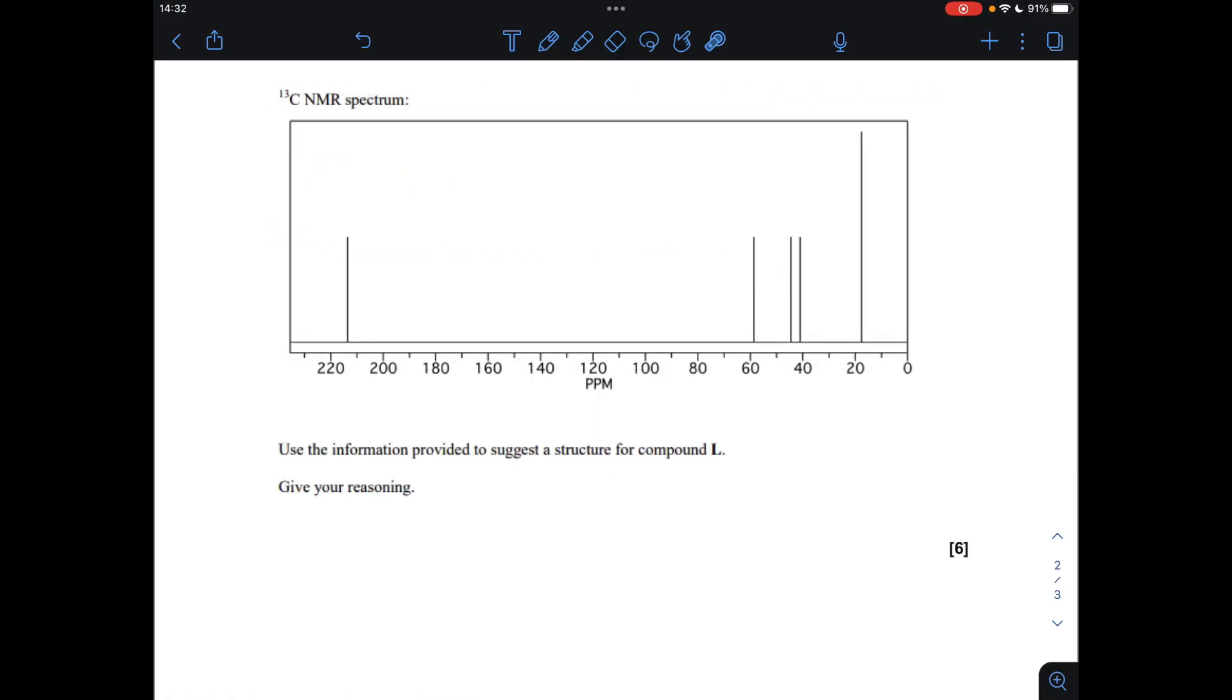I'm going to look at the carbon-13 NMR spectrum now. You can see we've got one, two, three, four, five peaks, so that means there's five carbon environments in the molecule. We've got a C double bond O environment, a C single bond O environment, and we've got three carbon-carbon environments.